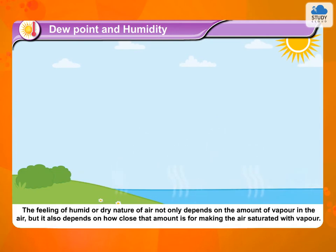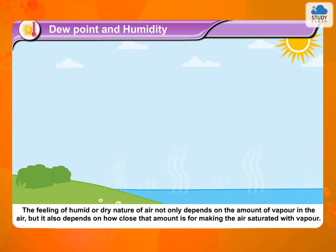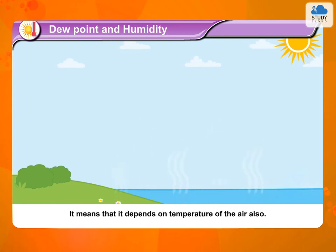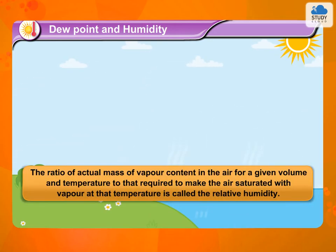The feeling of humid or dry nature of air not only depends on the amount of vapor in the air, but it also depends on how close that amount is to making the air saturated with vapor. It means that it depends on the temperature of the air also. The ratio of actual mass of vapor content in the air for a given volume and temperature to that required to make the air saturated with vapor at that temperature is called the relative humidity.